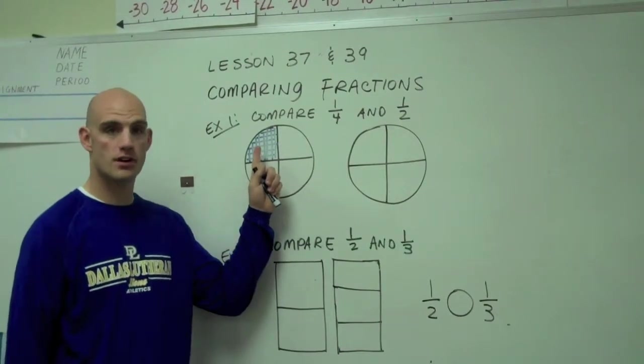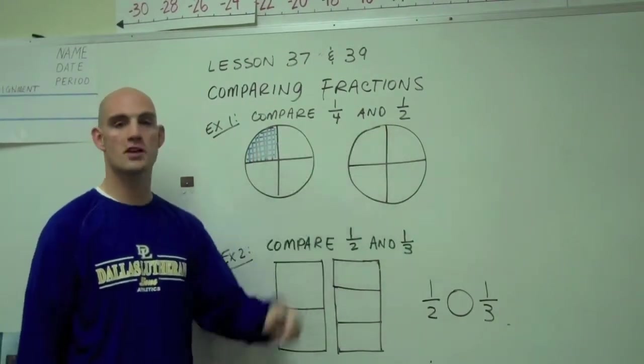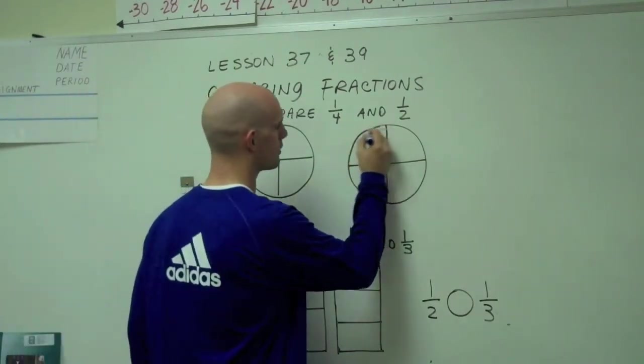What I'm going to do to compare is I'm going to shade one fourth in this first circle. I've shaded one fourth of this circle using blue. In the second circle, I'm going to shade one half in order to compare.